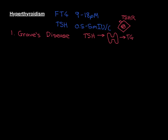In Graves' disease, what happens is the body produces an antibody that can bind to and stimulate that receptor. Its antigen-binding domain binds to the TSH receptor, and when it does, that triggers the same intracellular signalling cascade, activating the thyroid cells to produce thyroxine. You end up with massive over-activation of the thyroid gland because of these auto-antibodies directed against the thyroid-stimulating hormone receptor — called the anti-thyroid-stimulating hormone receptor antibody.